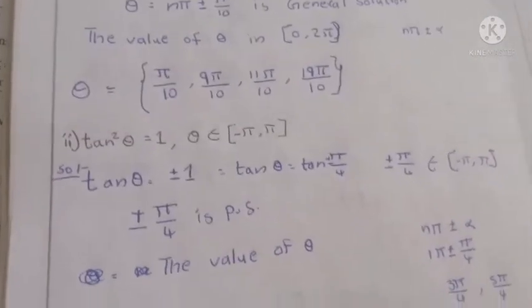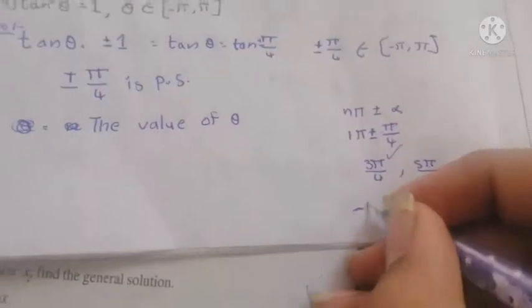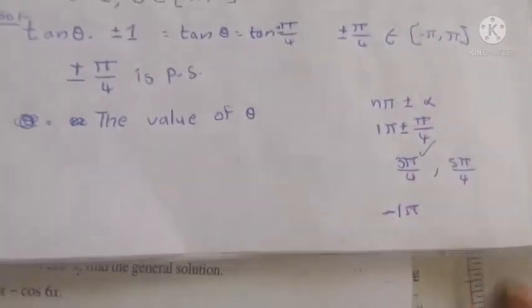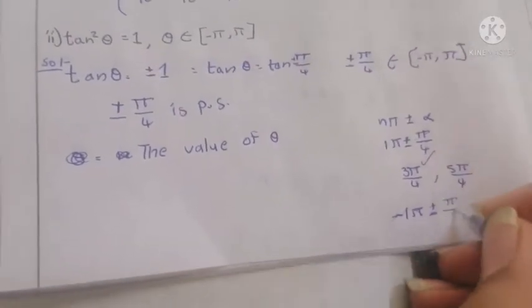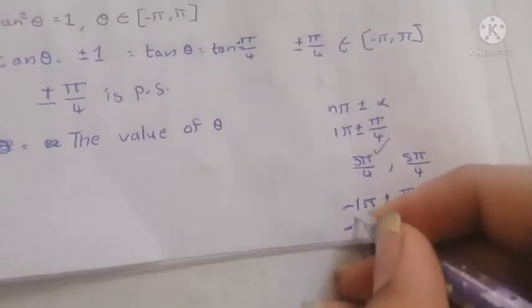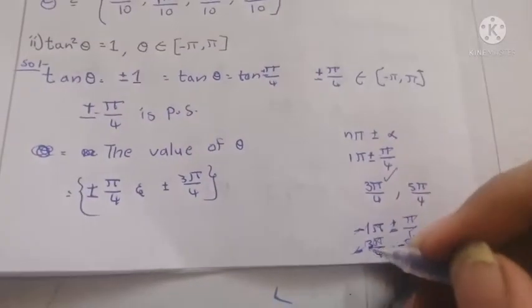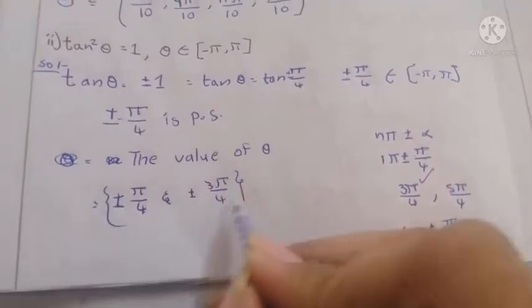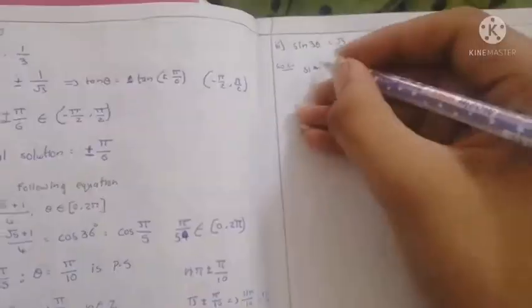From n=1 we get 3π/4. Substituting n=-1 gives -π ± π/4, yielding -3π/4 and -5π/4. So the solution set is {±π/4, ±3π/4}.